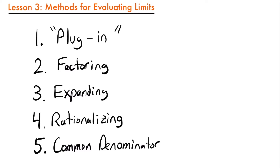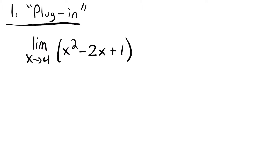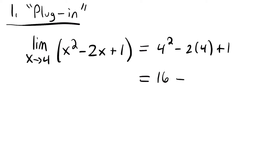First, we have the plug-in method, which you're already familiar with. We have the limit as x approaches 4 of x squared minus 2x plus 1. Just like the name says, we plug in our value of x, which is 4. So this equals 4 squared minus 2 times 4 plus 1, which simplifies to 16 minus 8 plus 1, equal to 9. That's the plug-in method.